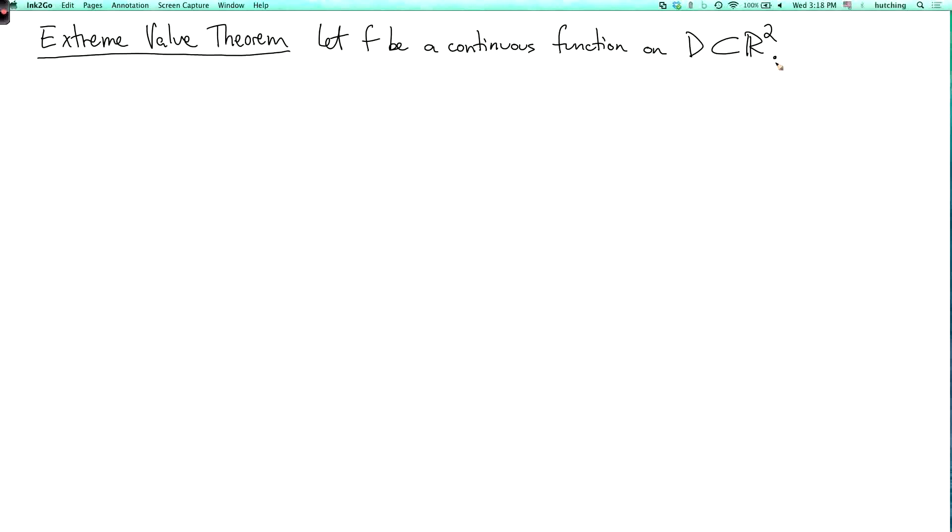Now remember the extreme value theorem for functions of one variable says that if I have a continuous function on a closed interval, then it has a global minimum and a global maximum. So here we have a continuous function, but now what is the analog of a closed interval in this context.